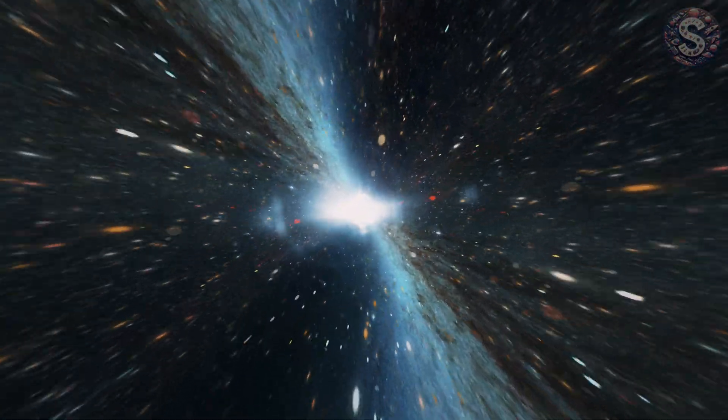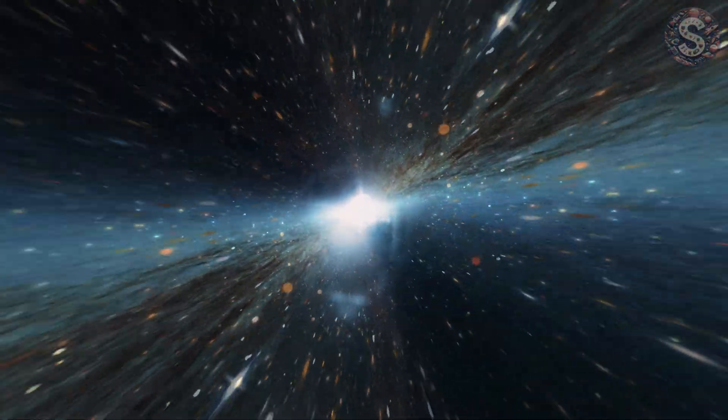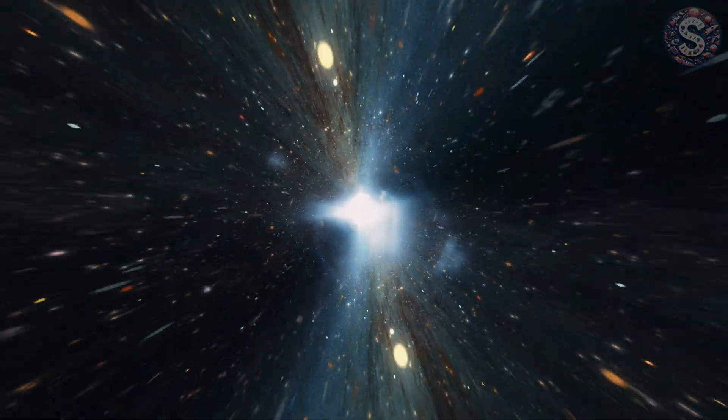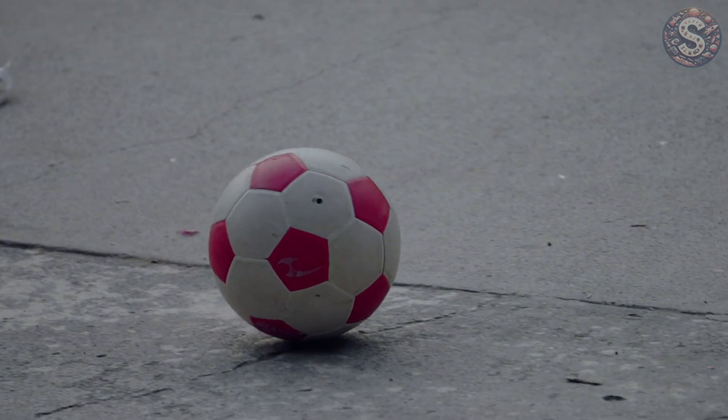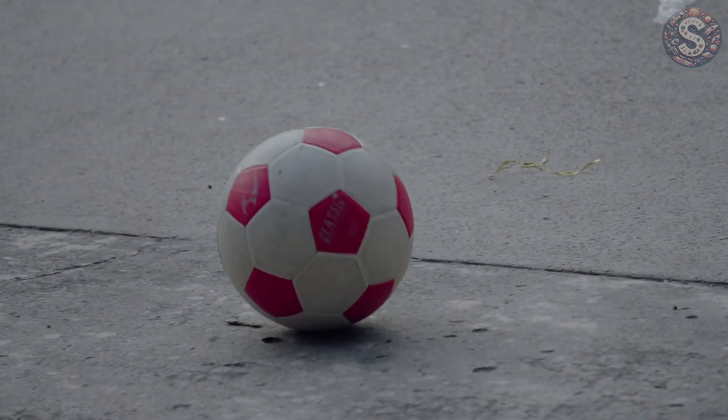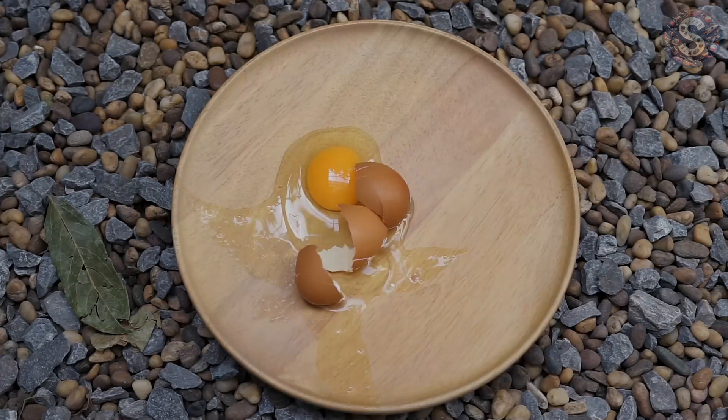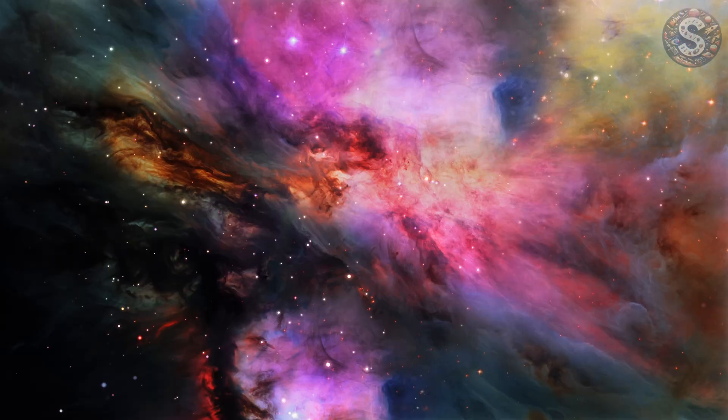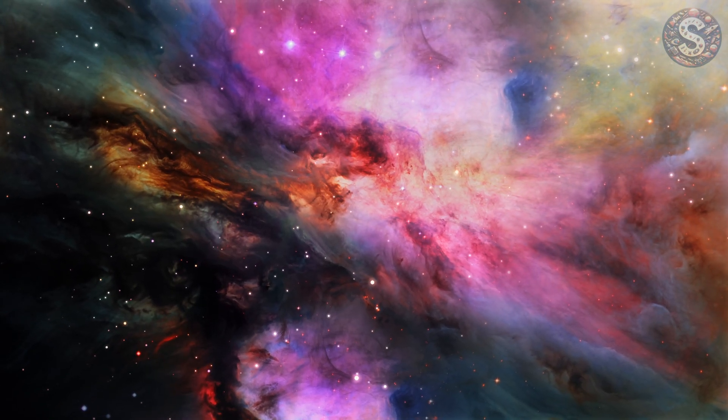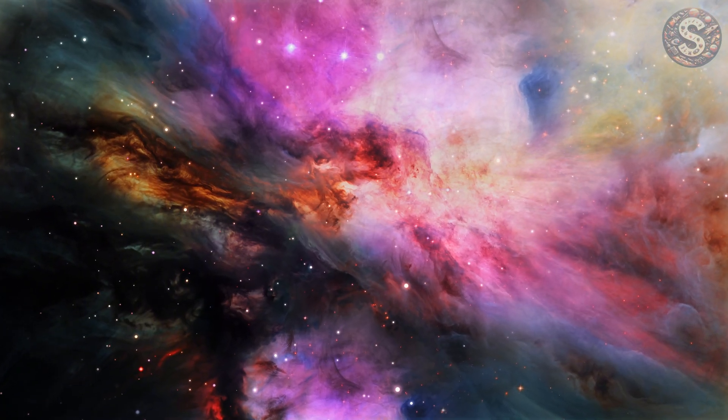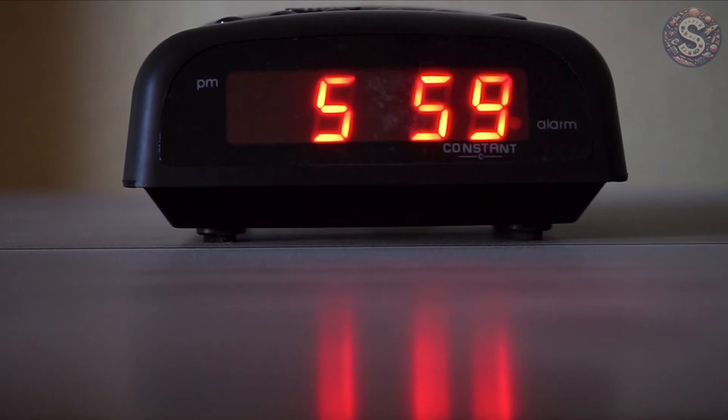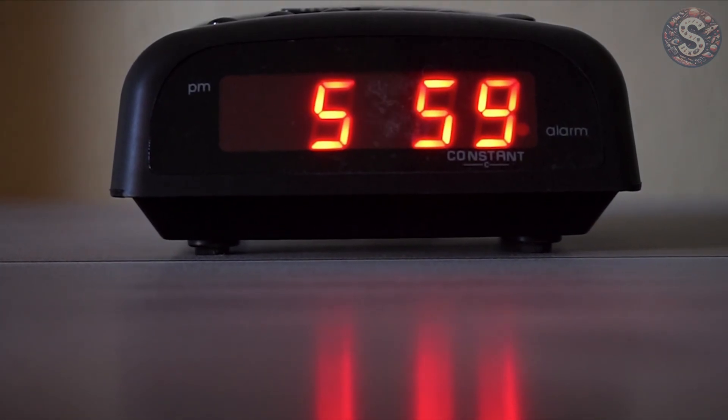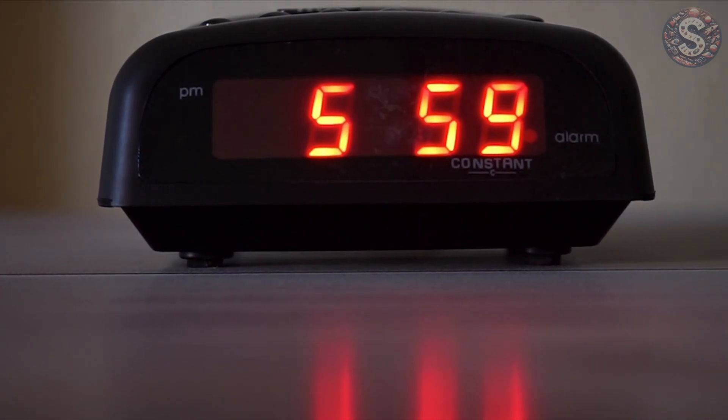Another clue comes from the concept of entropy. Time feels like it flows forward from past to future, but physics laws don't actually care which way you run the equations. A ball rolling downhill works just as well in reverse. So why don't we ever see broken eggs reassemble themselves? The best explanation we have is entropy. The universe tends towards disorder. But that means what we call the arrow of time might just be a byproduct of rising entropy, not a fundamental feature of reality itself.